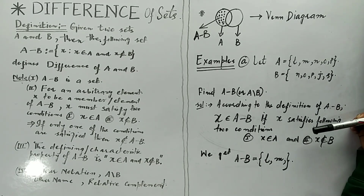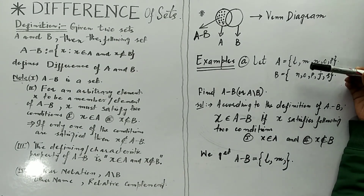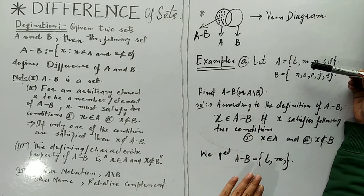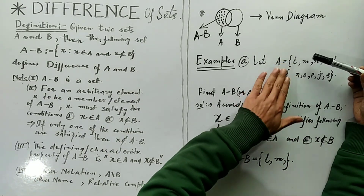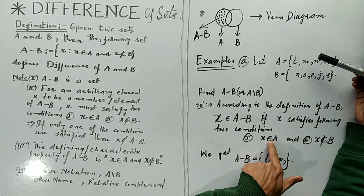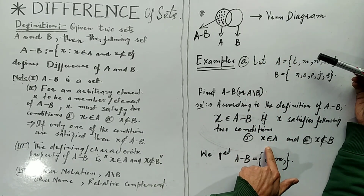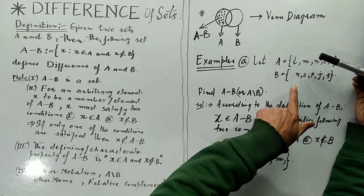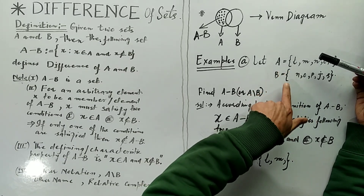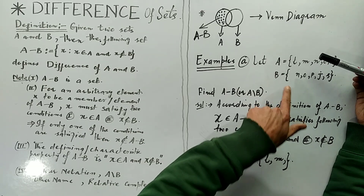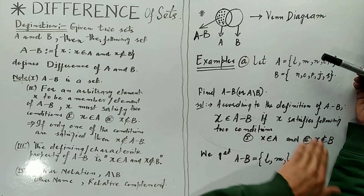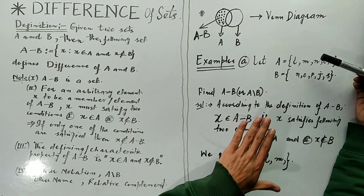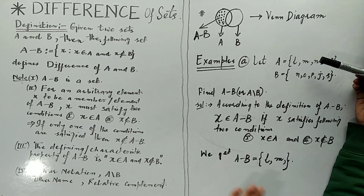Let us apply the definition to each element. L will be included in A minus B if L belongs to A — yes it does — and L must not be an element of B — and indeed L does not belong to B. So L satisfies both conditions, which means according to the definition, L is going to land in A minus B.